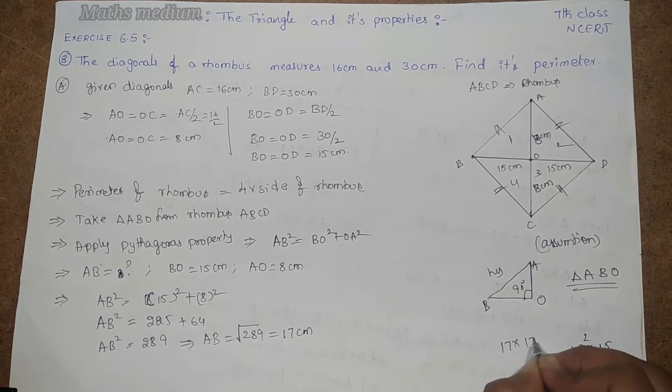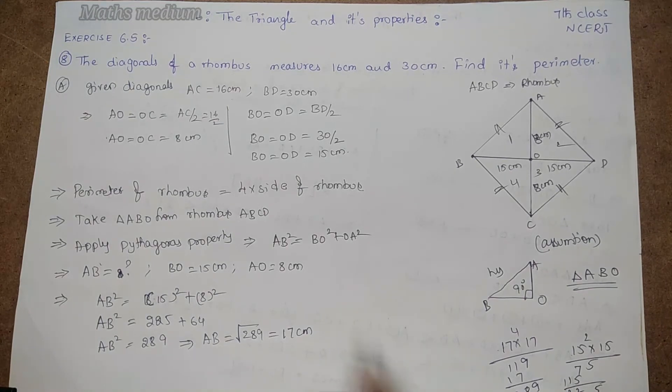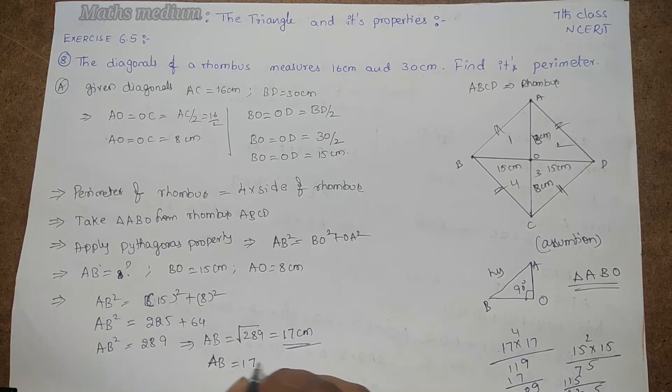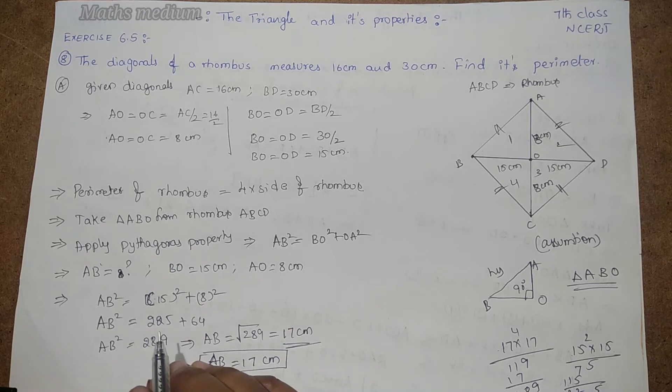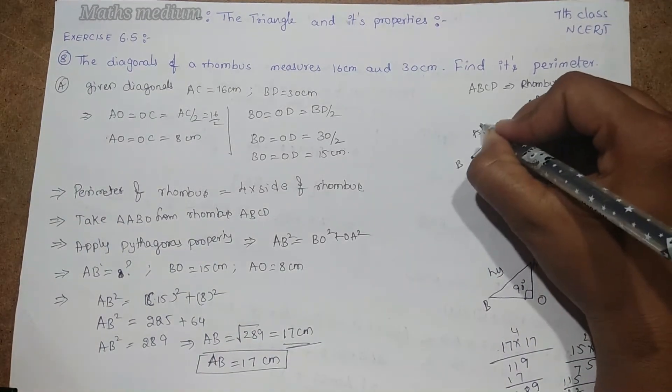17 into 17 equals 289. So AB equals 17 cm is the final one.